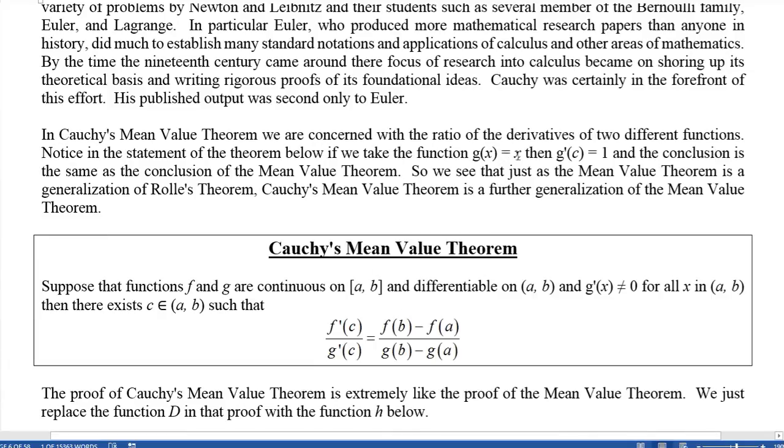If you let the function g(x) be the function g(x) = x, then of course g'(x) is 1 for any x, so g'(c) is 1. So this denominator right here becomes 1 on the left, so the left side becomes f'(c). Then the right side, g(b) is b and g(a) is a, so this becomes f(b) - f(a) over b - a, which is exactly the conclusion of the regular Mean Value Theorem.